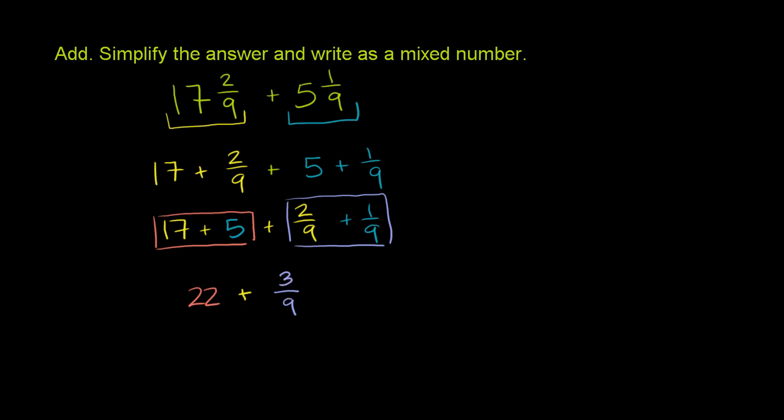But this can be simplified. Both the numerator and the denominator are divisible by 3. Divide the numerator by 3, you get 1. Divide the denominator by 3, you get 3.